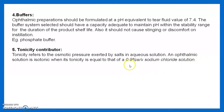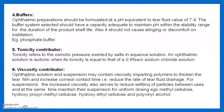0.9% NaCl is said to be isotonic with our blood plasma. Ophthalmic solutions and suspensions may contain viscosity-imparting polymers to thicken the tear film and increase corneal contact time, reducing the rate of tear fluid drainage. For suspensions, increased viscosity also serves to reduce particle settling and maintain uniform dosage. Examples include methyl cellulose, hydroxypropyl methyl cellulose, hydroxyethyl cellulose and polyvinyl alcohol.